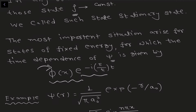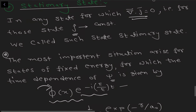Wave functions that are separable — a spatial part multiplied by e to the power (−iEt/ℏ) — are stationary states. For those wave functions, the divergence of J is zero. We will discuss more about them in future videos, but the take-home message is: wave functions for which divergence of J equals zero are basically stationary states.